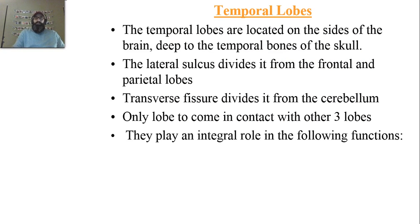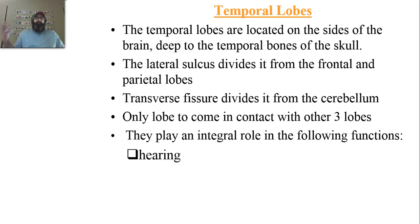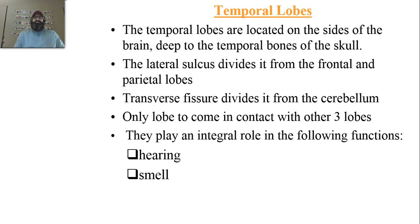Most of the temporal lobe plays an integral role in the following functions. You have hearing — an easy one to remember because your ears are on the side of your head right next to the temples, which is where hearing is processed. You also have smell processed here. Do not confuse this with the location of the olfactory bulbs. The olfactory bulbs are large centers of neurons from the nasal passageway that concentrate and run a neural pathway down, converging on the olfactory centers of the temporal lobes.